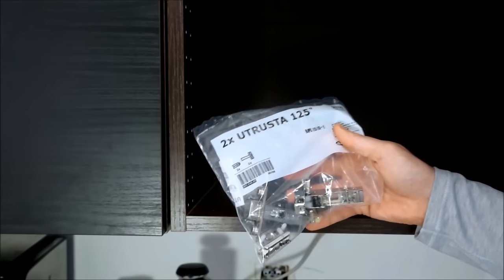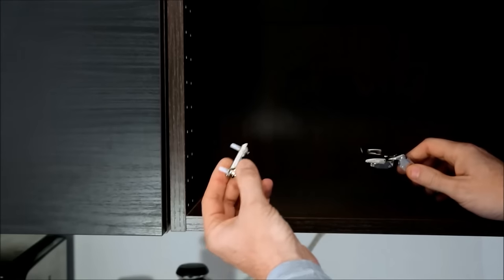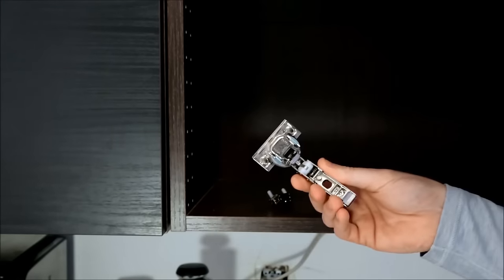This is the Utrust Hinge from IKEA and this is how you install it. There are two pieces: a piece that mounts to the cabinet and a piece that mounts to the door.